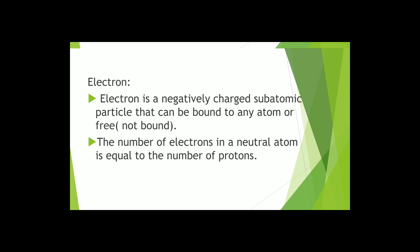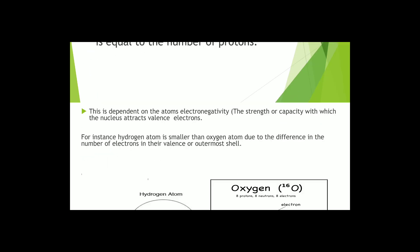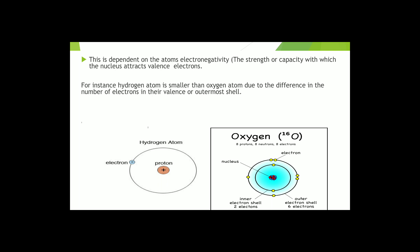This also depends on the number of electronegativity, means the strength or capacity with which the nucleus attracts the valence or large shell electrons. For example, hydrogen atom is smaller than oxygen atom due to the difference in the number of electrons in their valence or outermost shell.